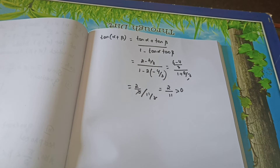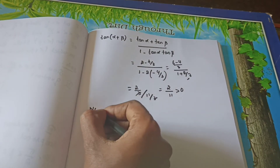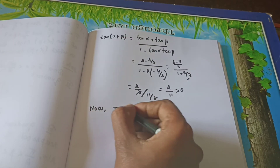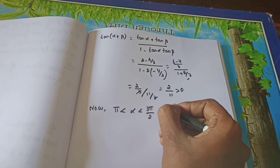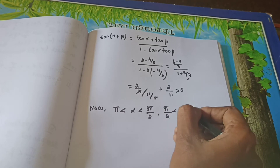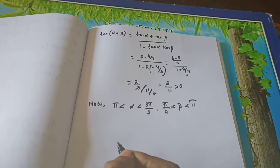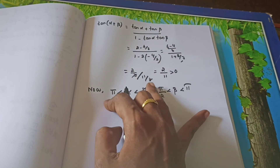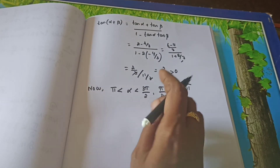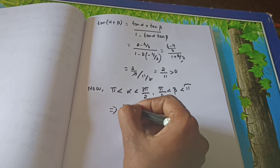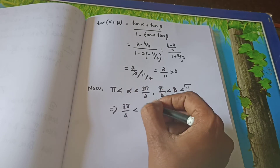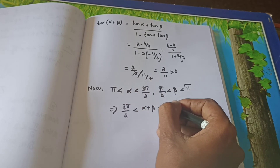Now we need to find where α + β terminates. The range of α is π to 3π/2, and the range of β is π/2 to π. Adding these ranges: π + π/2 less than α + β less than 3π/2 + π. That gives 3π/2 less than α + β less than 5π/2. So 3π/2 is 270° and 5π/2 is 450°.